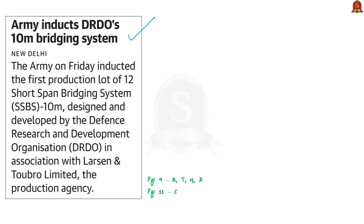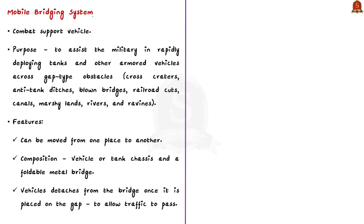The next discussion is based on a snippet article about the Short Span Bridging System. The Indian Army recently inducted the first production lot of 12 Short Span Bridging Systems of 10 meters, called SSBS 10m. It is a mobile bridging system — a combat support vehicle designed to assist the military in rapidly deploying tanks and armored vehicles across gap-type obstacles such as rivers. Since it is mobile, it can be moved from one place to another.